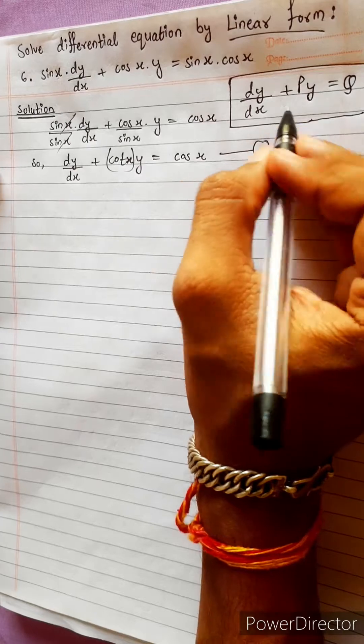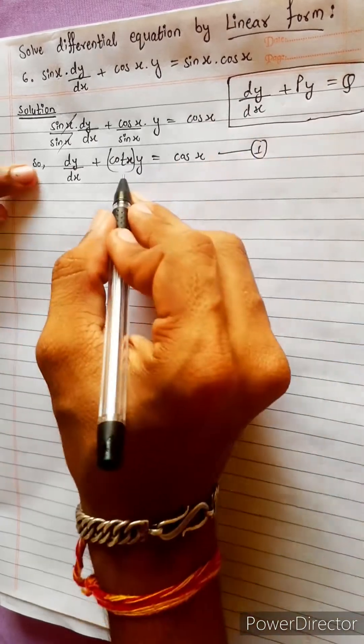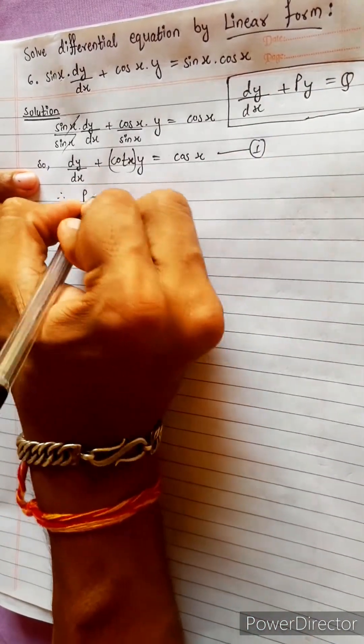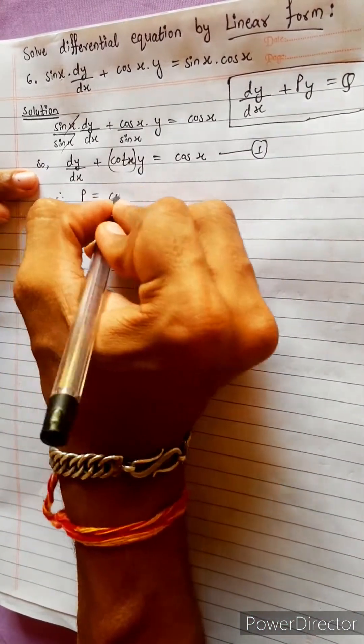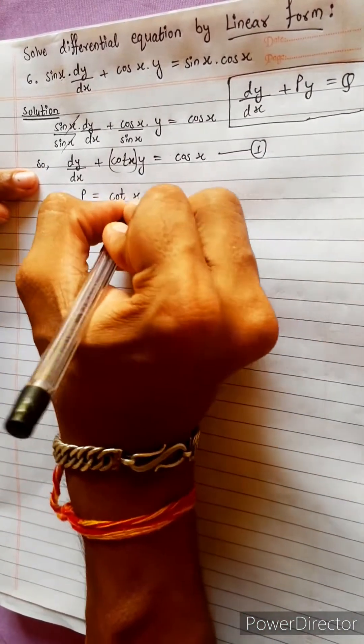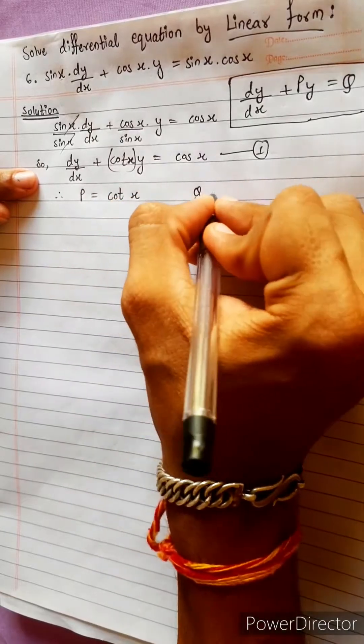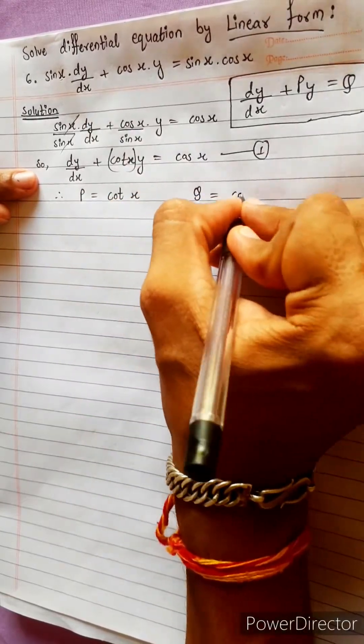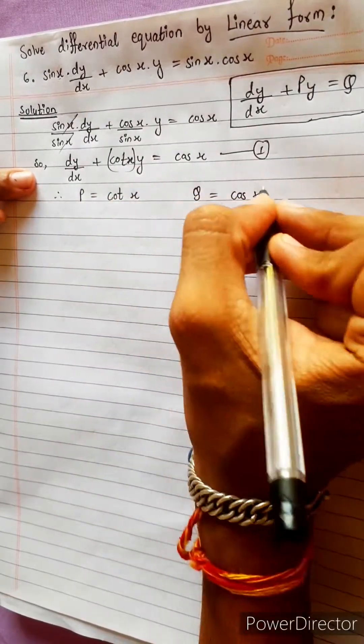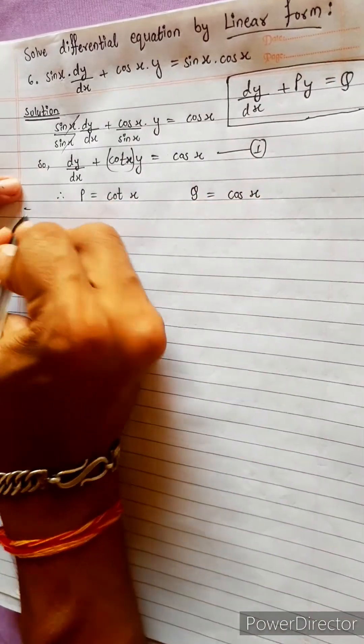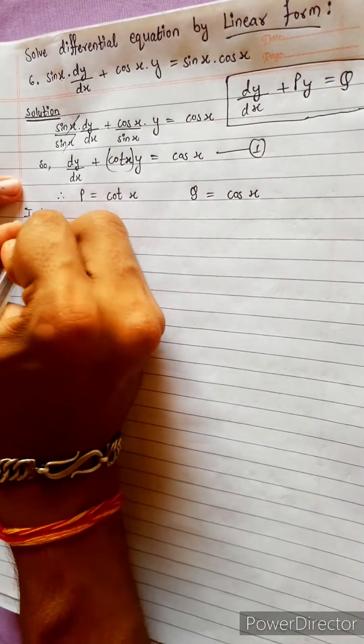We will compare the equation. What is p? p equals to cot x. Therefore p equals to cot x. q equals to cos x. We will compare the equation. Integrating factor.